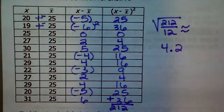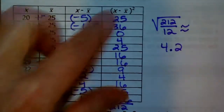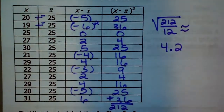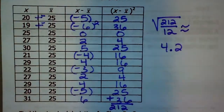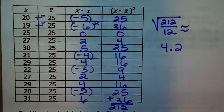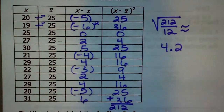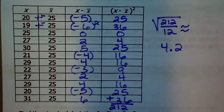So this is approximately equal to 4.2, meaning the values in the data set vary from the mean by about 4.2. Our range before said 12 years, so this gives us different — and much better — information. It gives a much more accurate picture of how far away these data values are from those measures of central tendency.